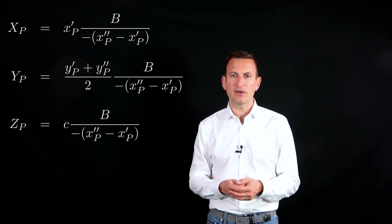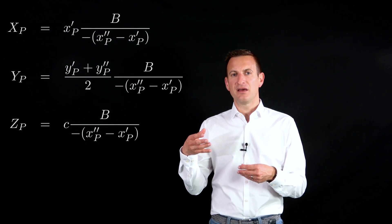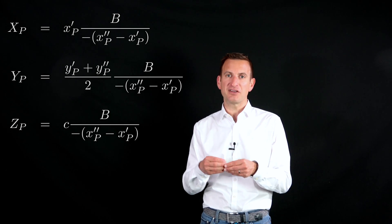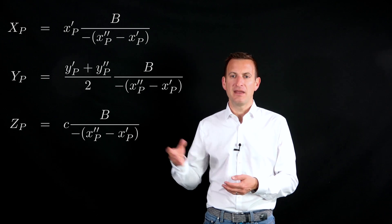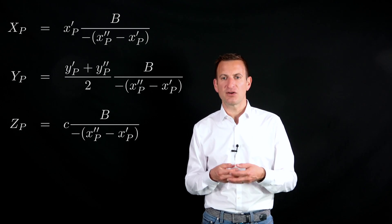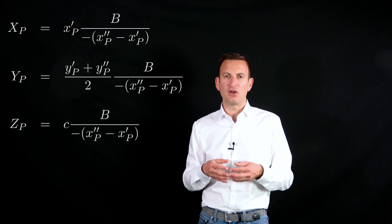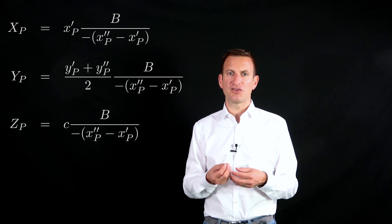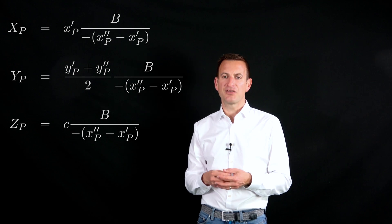The same basically happens for the y location. The only thing is that I'm averaging where I found this point, in which row I found the point in camera image one and camera image two. In case they're offset, in the ideal setup they should be identical, averaging here over there. And the depth is even more interesting because I can estimate the depth independent of the absolute x and y location of the point in the image.